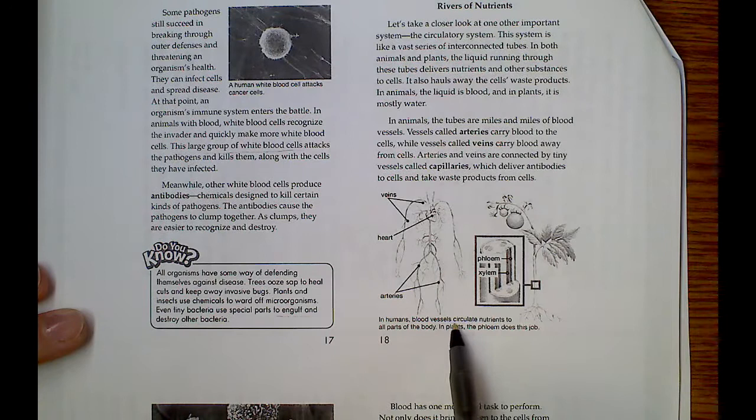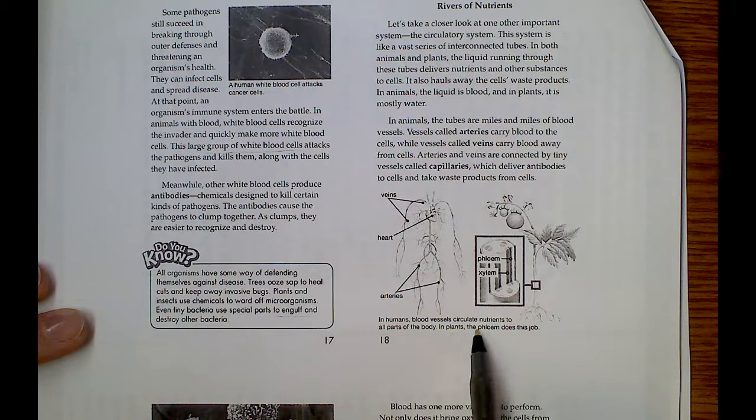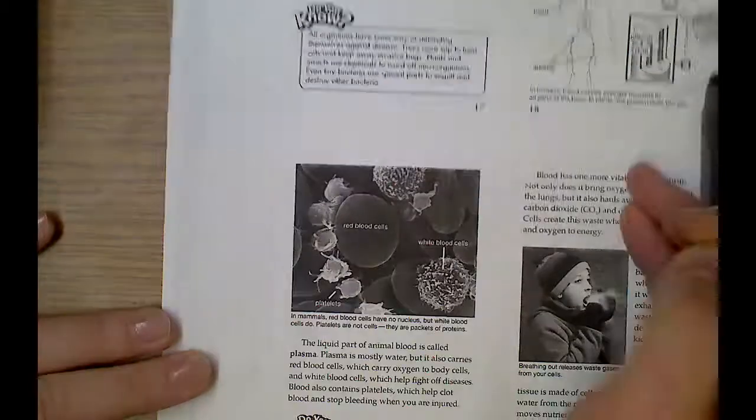In humans, blood vessels circulate nutrients to all parts of the body. In plants, the phylum does this job. Interesting.